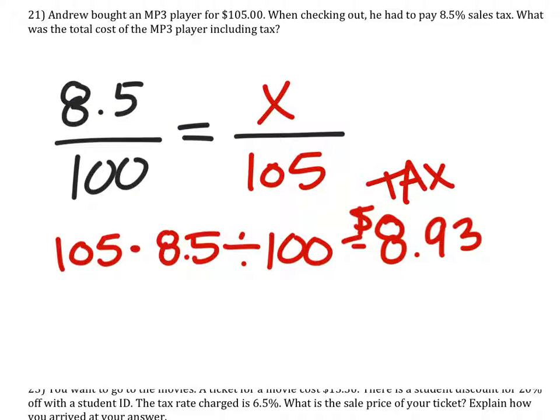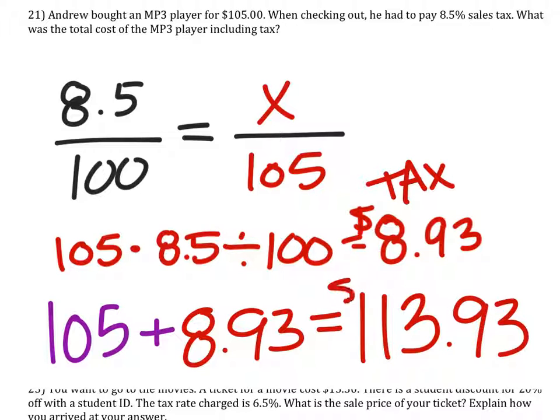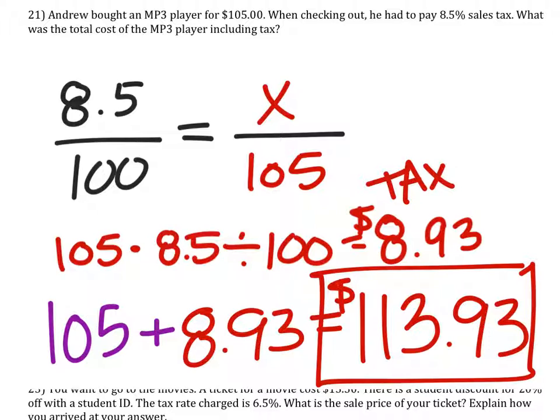So if the price was $105 and we have to add the tax of $8.93, we should get $113.93. So that is his cost, including the tax.